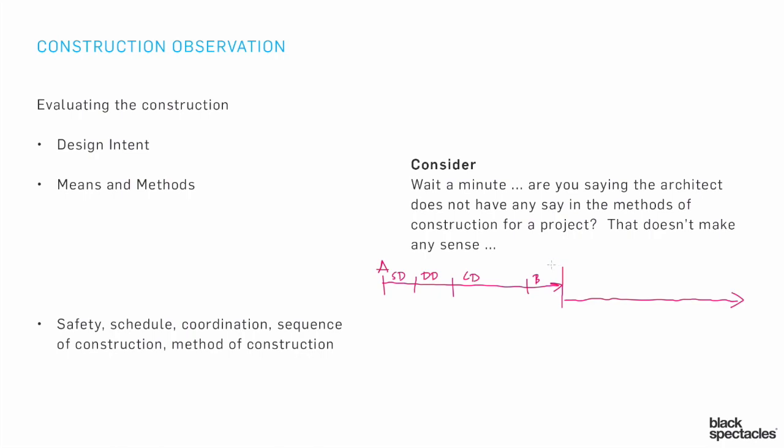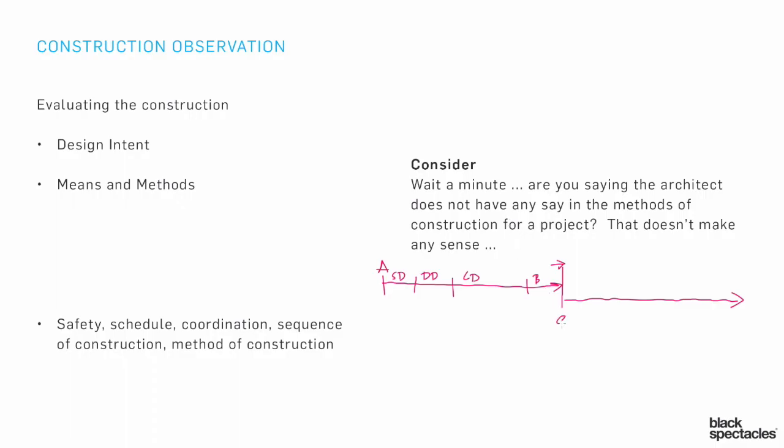Up until that moment, all of those issues about the materiality, the sequencing, all those means and methods issues — they're all still conceptual, all still on paper. There's no physicality to them. The architect is kind of in control at those stages, but there's also no general contractor, so there's nobody else that could be in control. At this point, we now have the GC, and this is the point where everything moves from the conceptual into the physical.